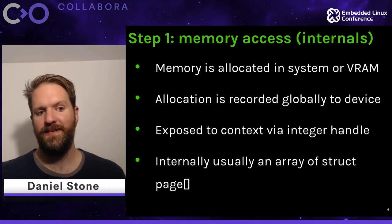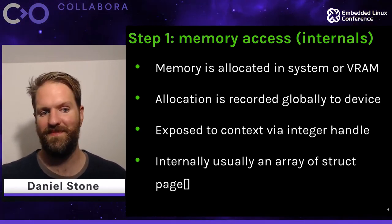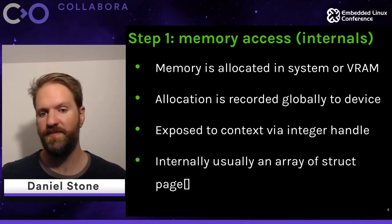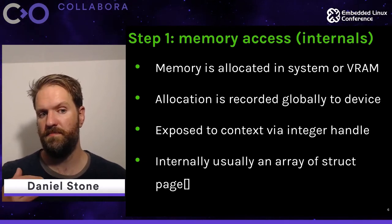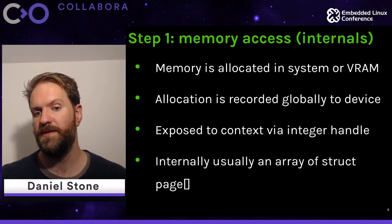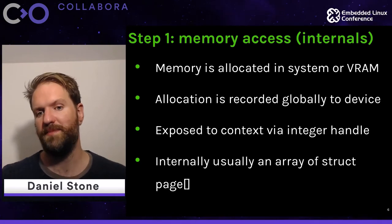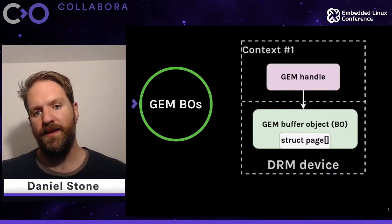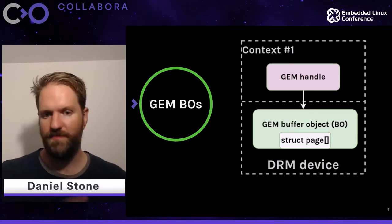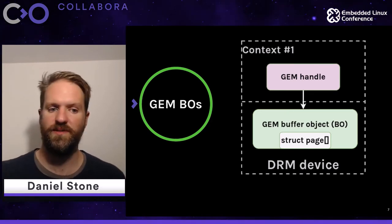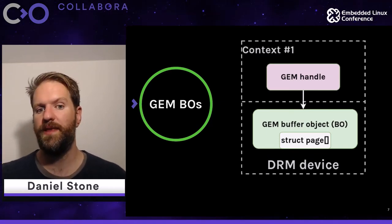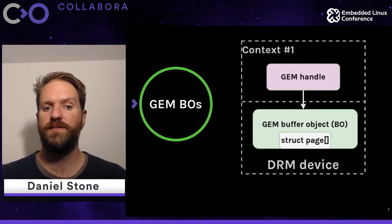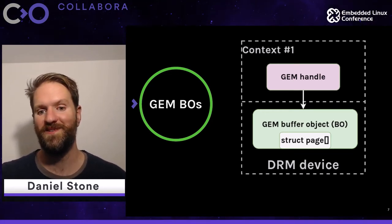This is usually just an array of page structs or DMA addresses — just fundamental memory addresses. The integer handle refers down to the device's core tracking structure for the BO, which conceptually wraps the pages. The handle is just an identifier. Now we've allocated our data — inputs, outputs, space for state and shaders — the second device-specific IOCTL you'll hit is command submission, to tell the GPU to actually go and do something.